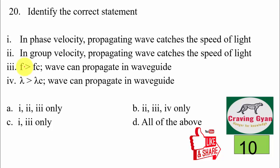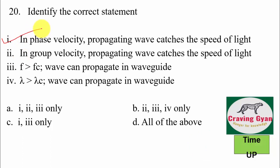Question 20: identify the correct statements — first, in phase velocity a propagating wave can catch the speed of light; second, group velocity; third, whenever propagating frequency is greater than cutoff frequency, the wave can propagate in a waveguide; fourth, in terms of wavelength for dominant mode. We know phase velocity can exceed the speed of light — true. Group velocity cannot catch the speed of light — so option two is wrong. Whenever frequency is greater than cutoff frequency, the wave propagates — correct. For dominant mode, you need minimum frequency but maximum wavelength — so the fourth option is also correct. Hence first, third, and fourth options are correct — option number C is correct.